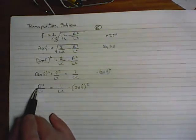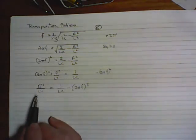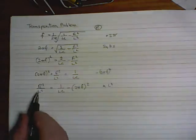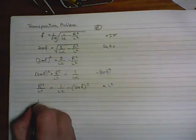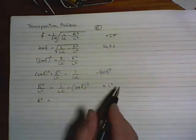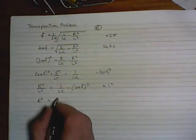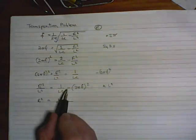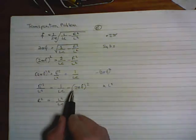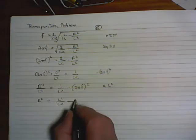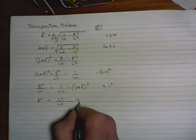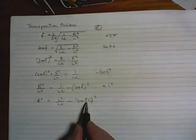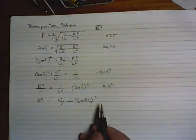That will leave us with R squared over L squared equals 1 over LC minus 2πf squared. That's okay, that's fine. Right, what's next? Well, okay, but this R squared is actually divided by L squared. So if we multiply both sides by L squared, so we put times L squared. That eliminates the R squared over L squared times L squared becomes R squared equals. Now, L squared times 1 is L squared.